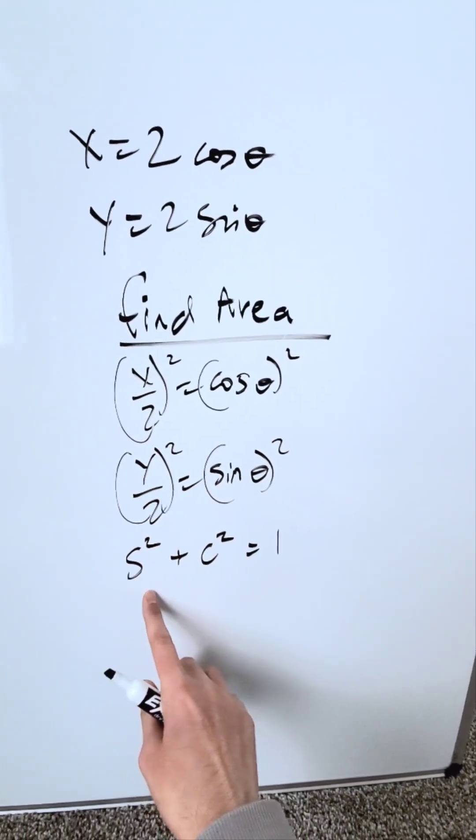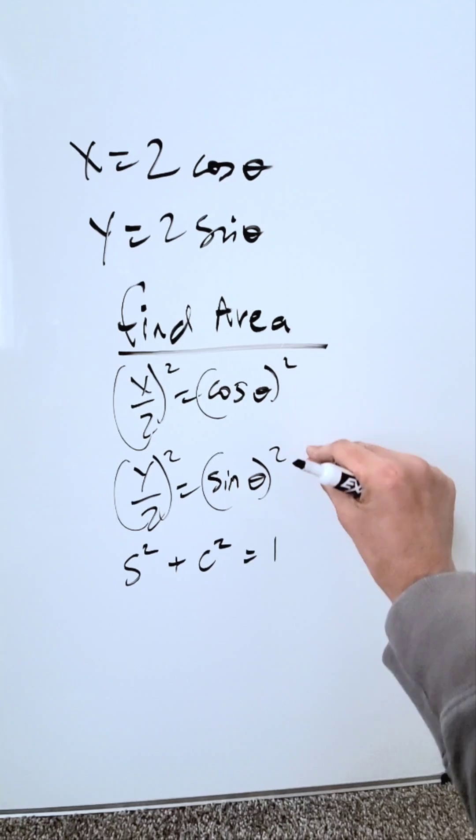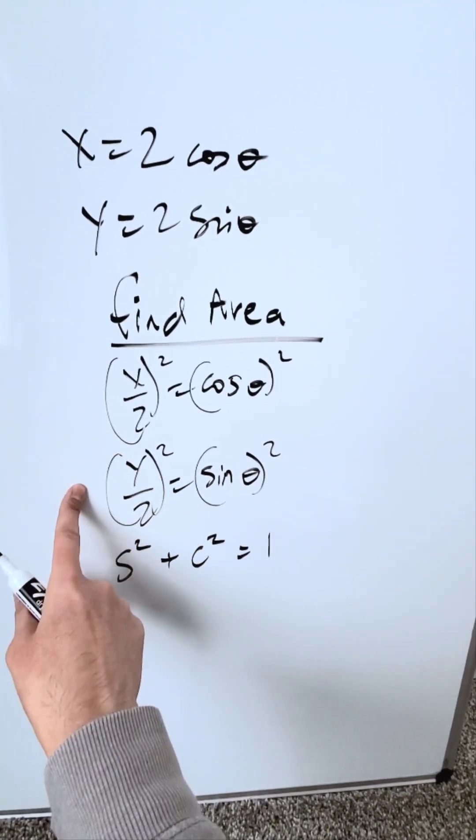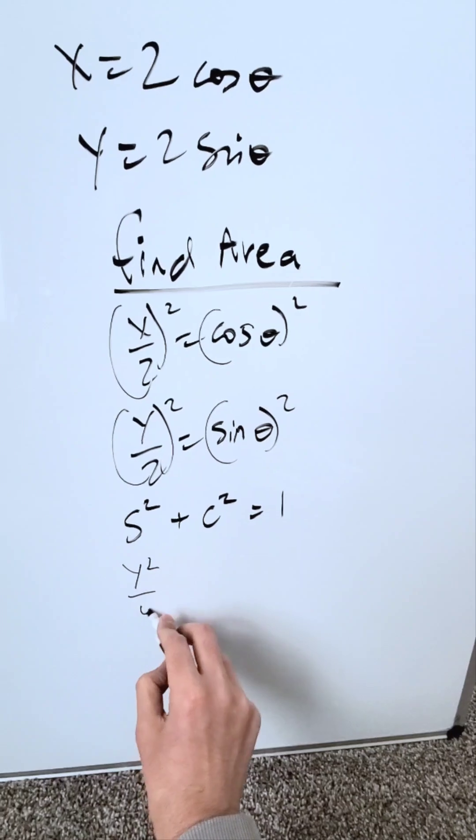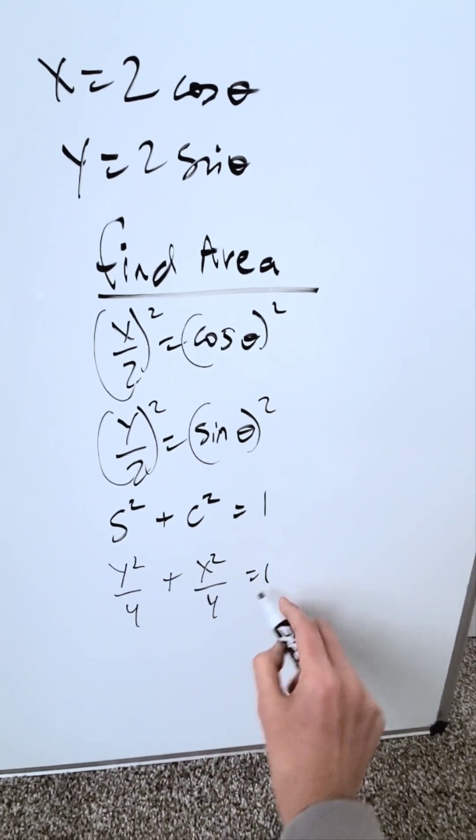I will look at these two substituents and run them through here. If these two in their sum is equal to 1, then these two in their sum must also be equal to 1. We will have y squared over 4 plus x squared over 4 is equal to 1.